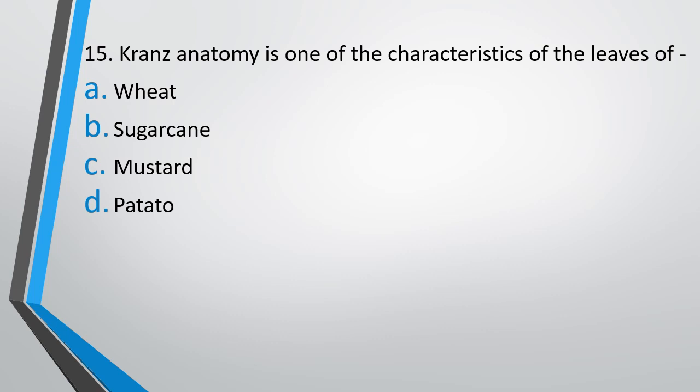Question number 15. Kranz anatomy is one of the characteristic features of the leaves of: wheat, sugarcane, mustard, potato. Kranz anatomy is option B, sugarcane.